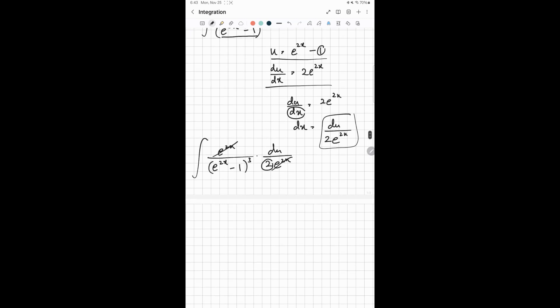So we have 2 over here, so it's half. You can take half out and leave that aside for now. So you end up with 1 over (e^(2x) - 1)^3 du.